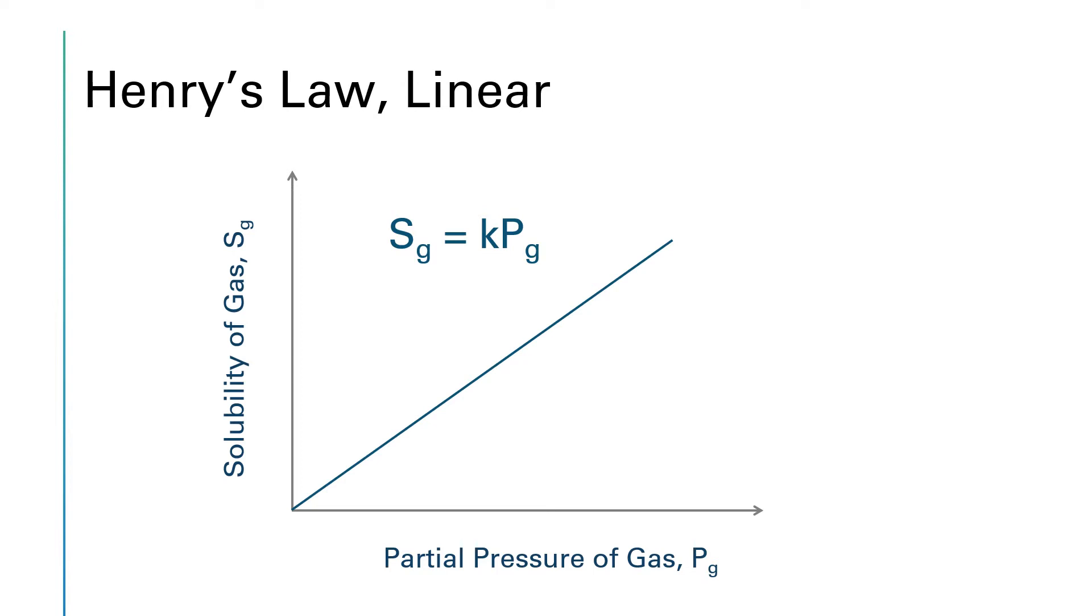This graph is another way of representing this relationship. The vertical axis is the solubility. The horizontal axis is the partial pressure of the gas. And the equation for the line is that the solubility of the gas is equal to a constant, the Henry's law constant, times the partial pressure.